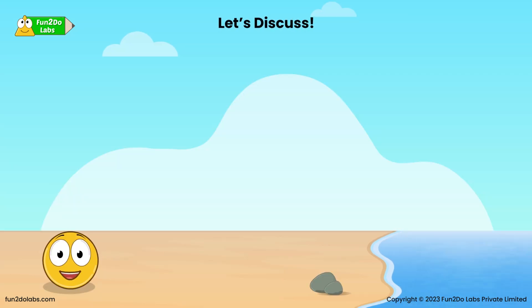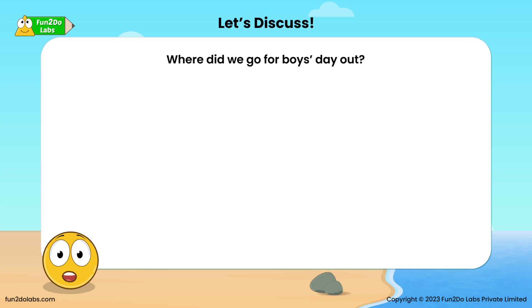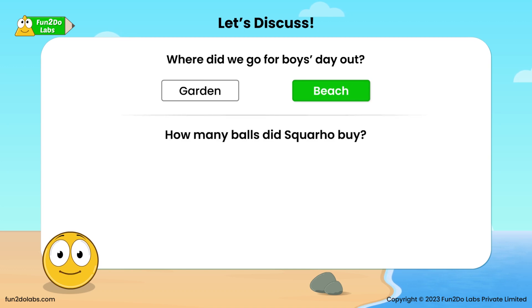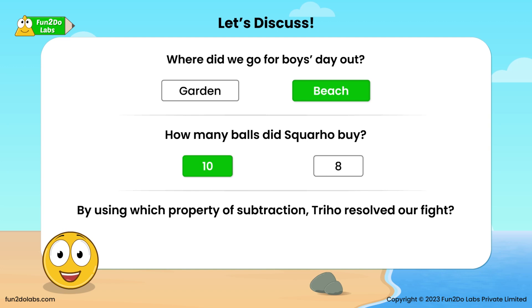Let's discuss. Where did we go for boys day out? Beach! How many balls did Squaro buy? Ten! By using which property of subtraction, Treeho resolved our fight? Identity property!